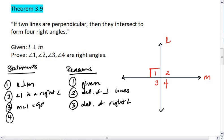If measure of angle 1 is 90 degrees, then that also means the measure of angle 4 is 90 degrees. And that is because vertical angles are congruent.